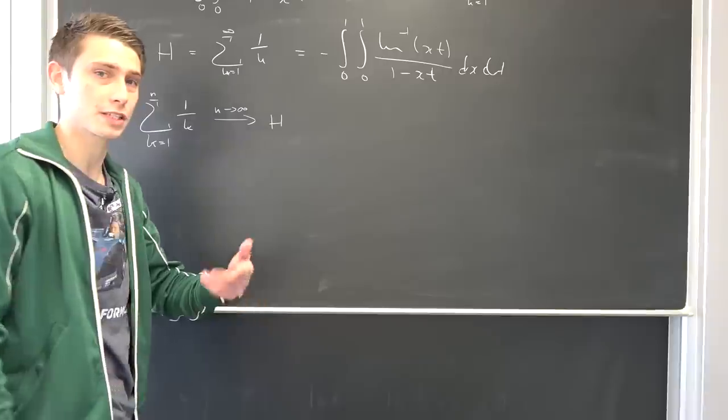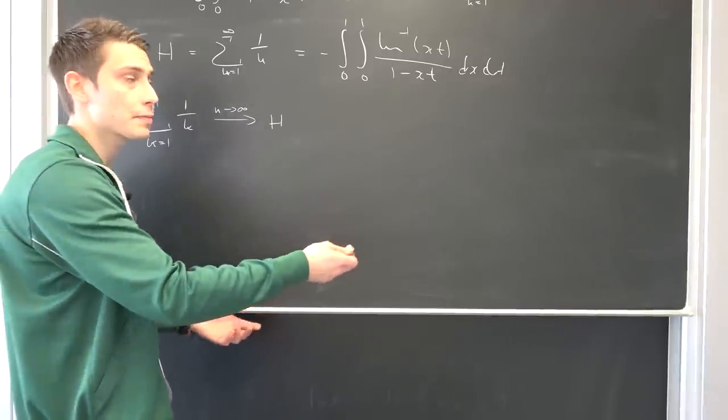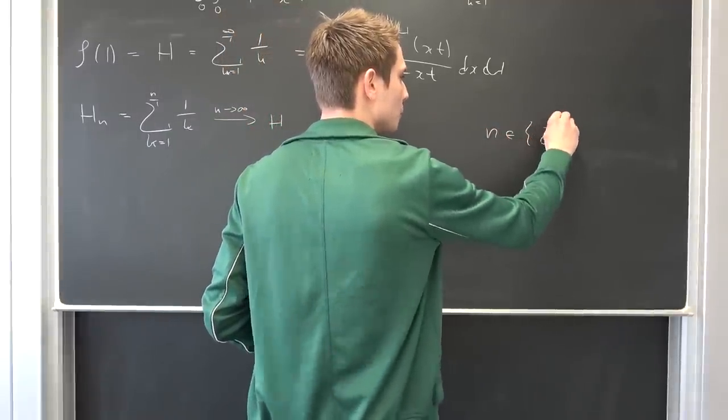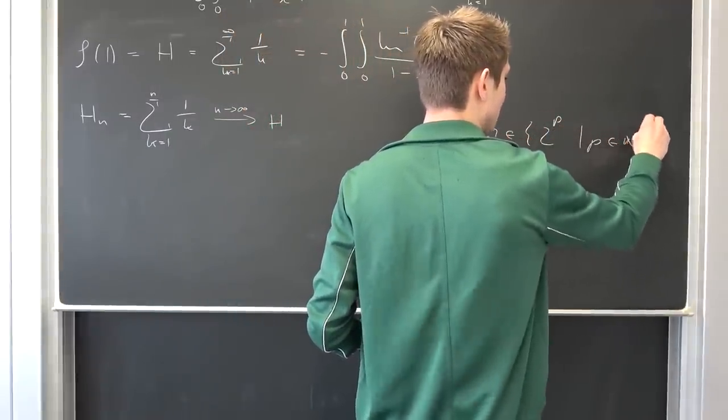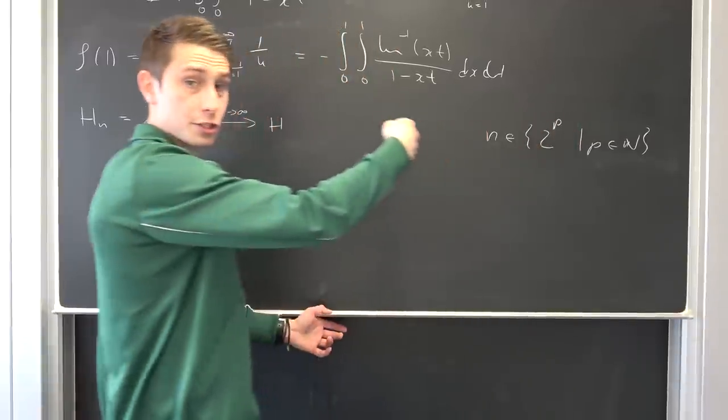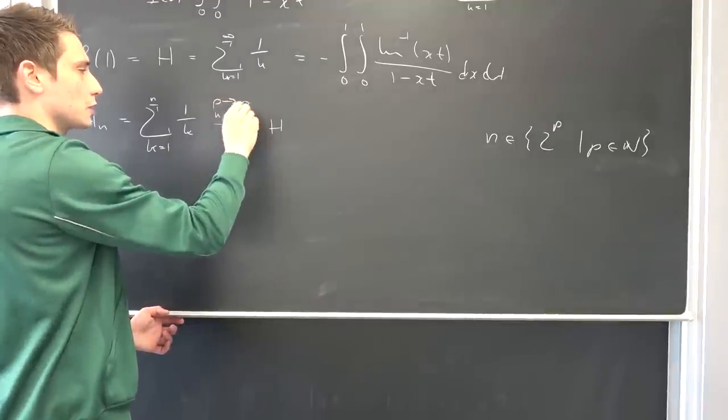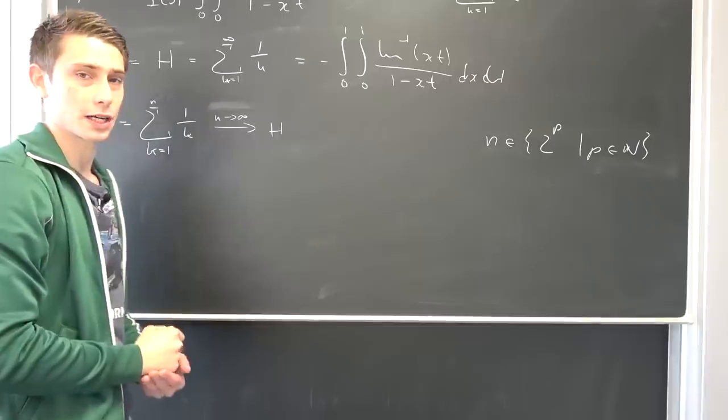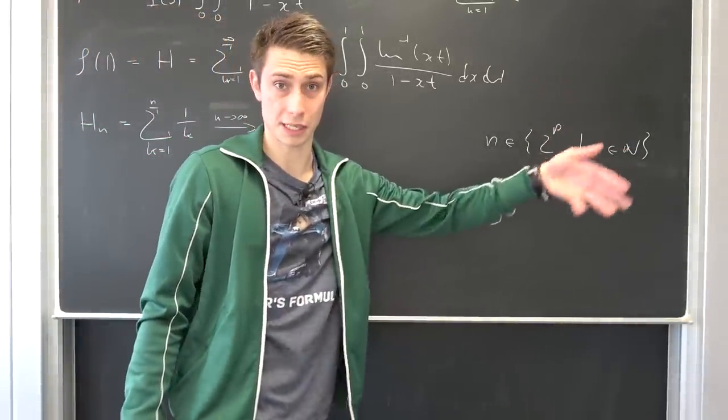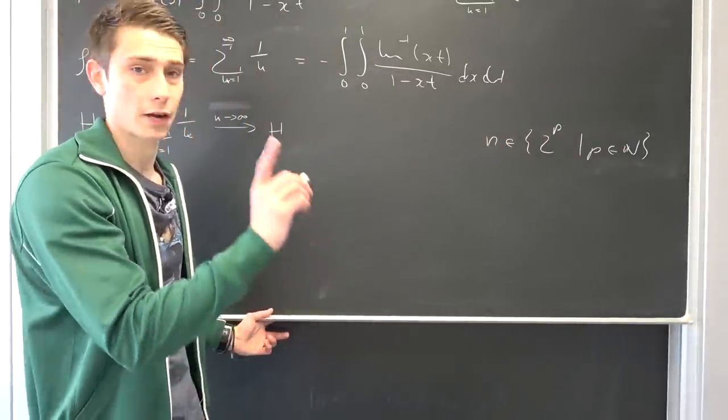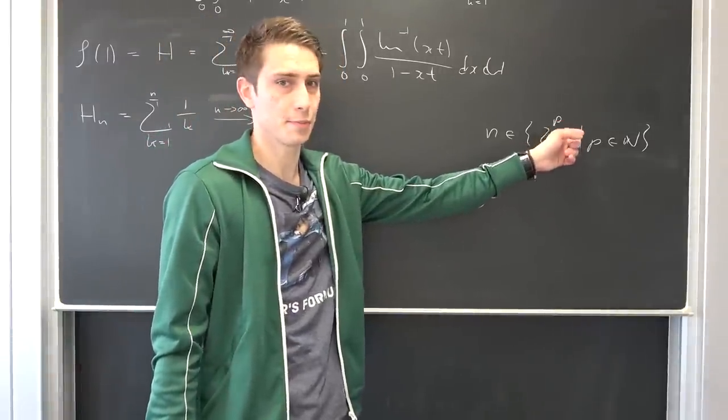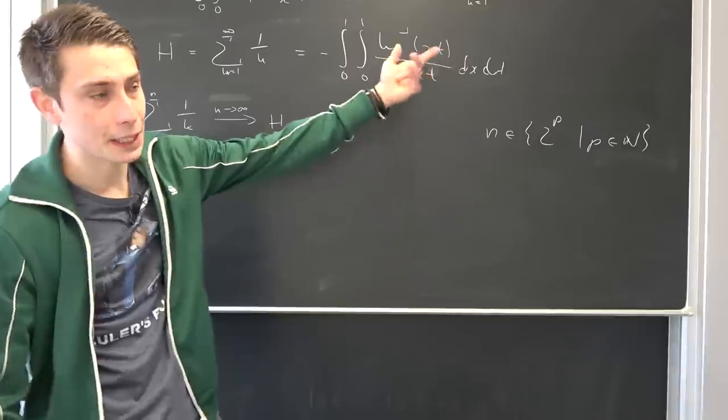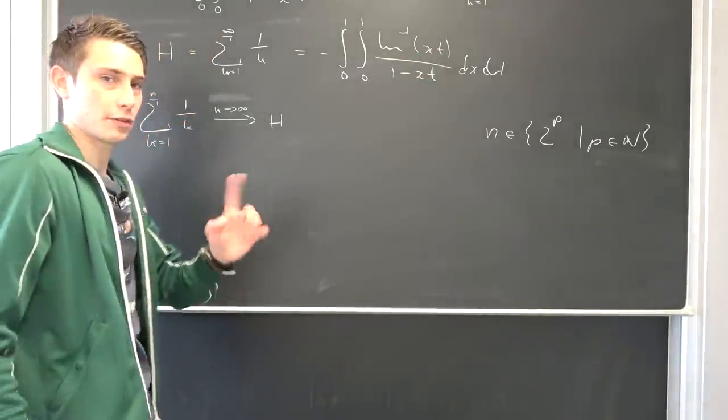I want you guys to consider the fact it really doesn't quite matter if you let n, a natural number, go to infinity. That's countable infinity. Or what we can do is take a look at n's of the form 2 to the p-th power where p is element of natural numbers. If we let this go to infinity, this p, then we are also just going to end up with the same infinity and we are going to arrive at our H, our harmonic series. I just want you guys to recognize this fact. This makes it really easy to show that this thing actually diverges.